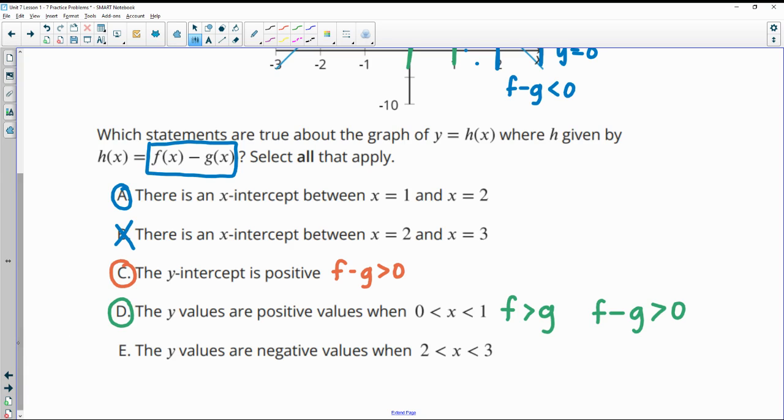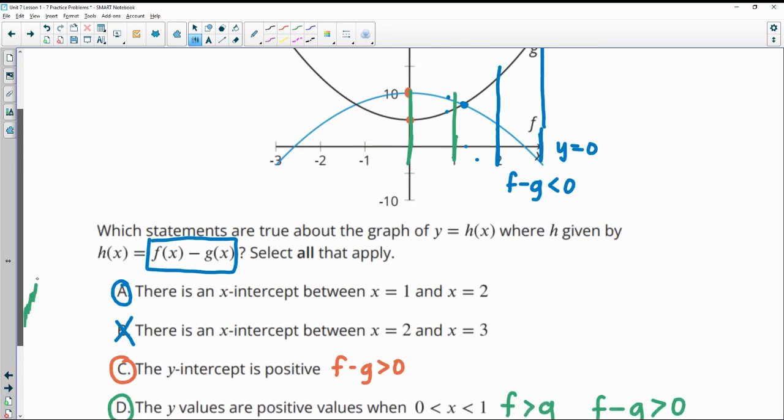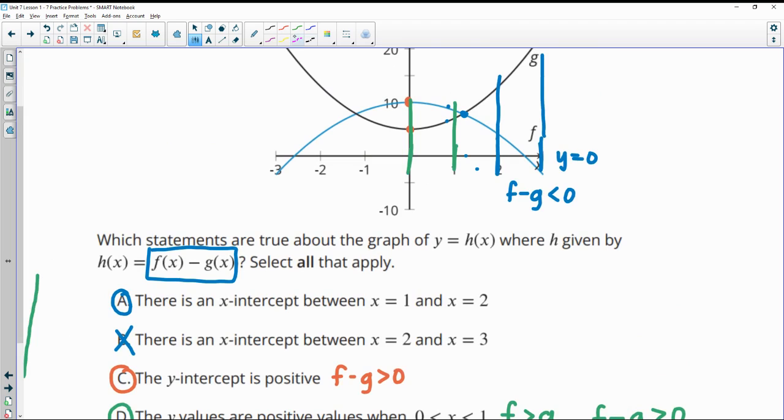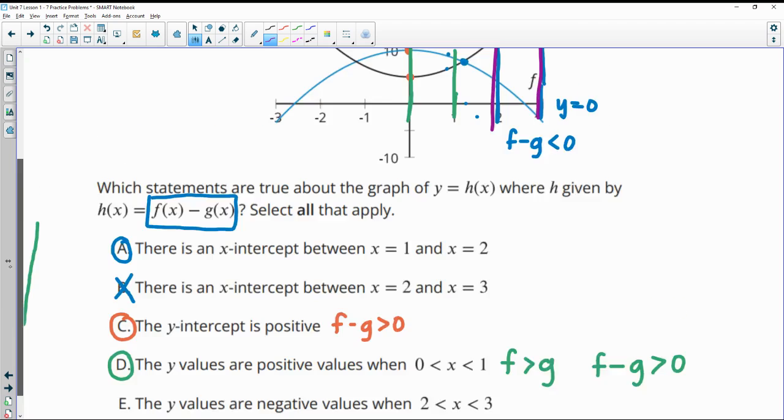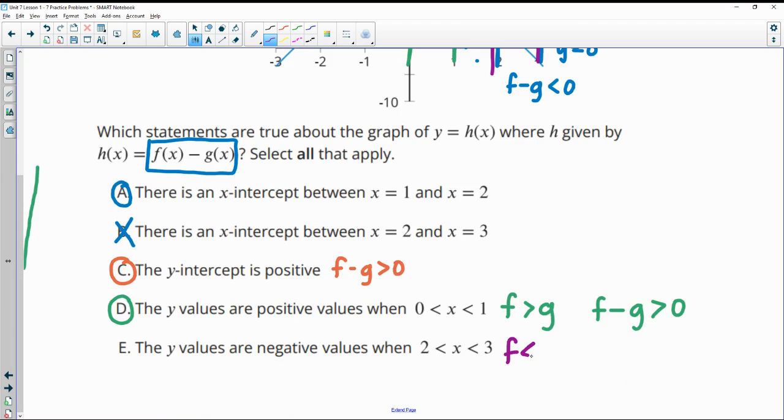And then the last one, the y-values are negative between two and three. So here was that two and three interval again. And in this whole interval, the f function is below the g function. So that means that the f function is less than the g function. So when we do f minus g, that's going to be less than zero. So definitely negative in that interval.